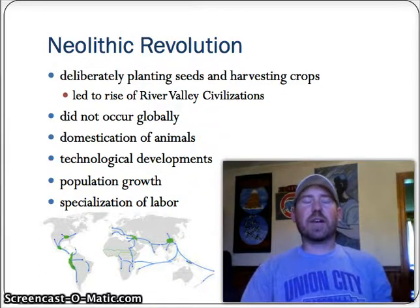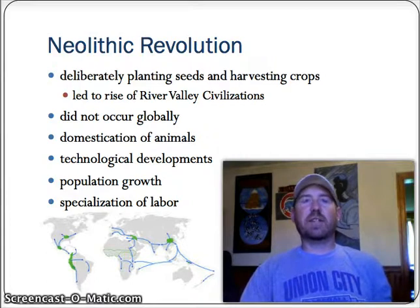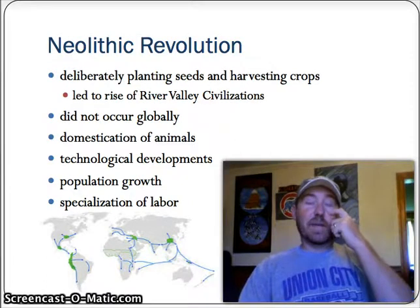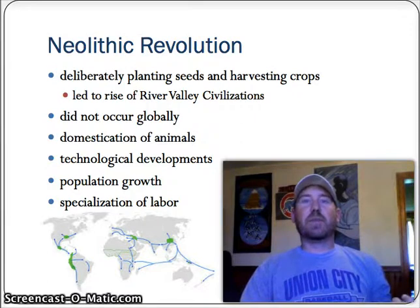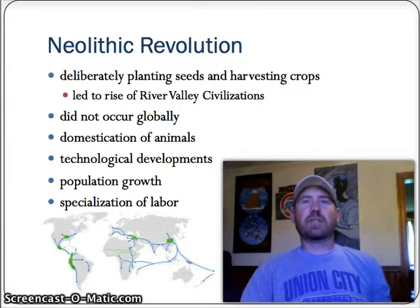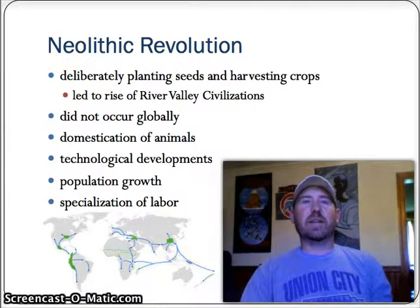Next is population growth. More food equals people living longer and having more children that survive, which equals an explosion in population — and that leads to cities and civilization. Also, we have the specialization of labor. For the first time, people don't have to simply farm for a living. You're producing enough of a surplus where people can now perform other tasks — they can be warriors, scribes, religious leaders, anything that doesn't have to do with agriculture. Know those key features because they play a big role going forward.